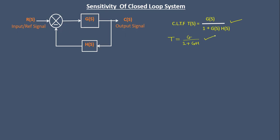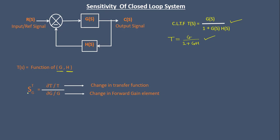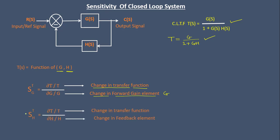From the transfer function of a closed-loop system, we can say T(s) is a function of the forward gain G and the feedback element H. We can define the sensitivity of the transfer function with respect to the forward gain G as ∂T/T divided by ∂G/G, and the sensitivity with respect to the feedback element H as ∂T/T divided by ∂H/H.